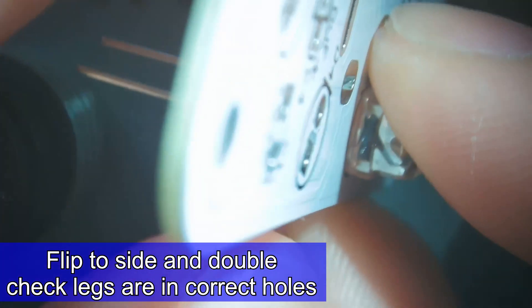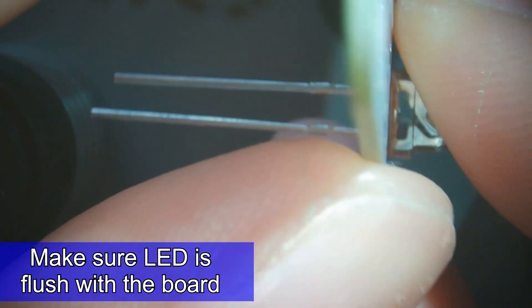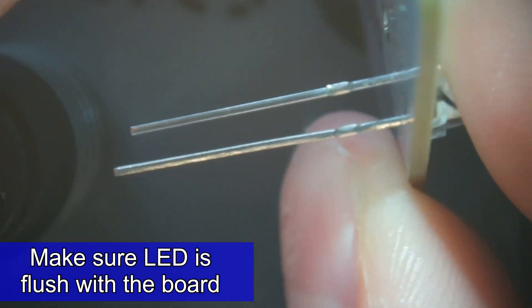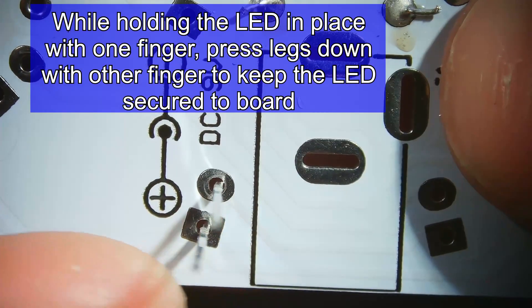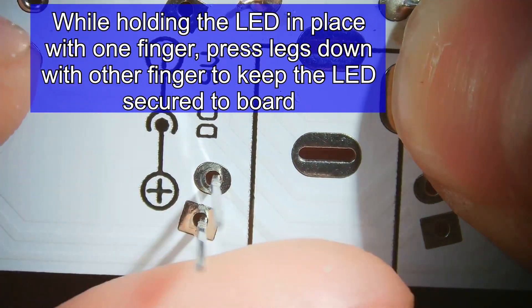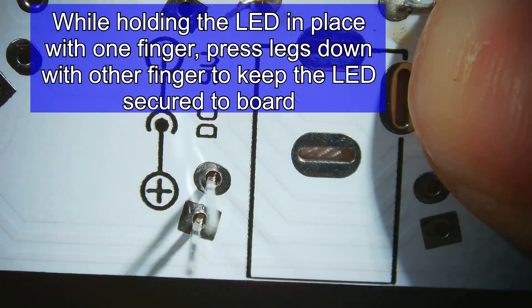Check again to see that the long leg is through the square hole and the short leg is through the round hole. Make sure the LED is flush with the board and continue to hold one finger on the back side.